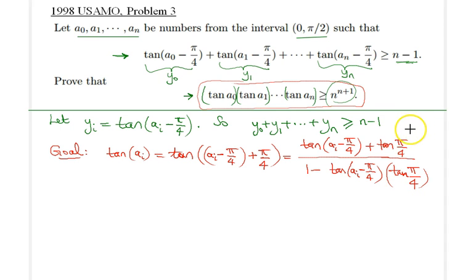Tangent π over 4 is equal to 1 and as a result, this expression can be written as 1 plus y sub i in the numerator and the denominator will become 1 minus y sub i.